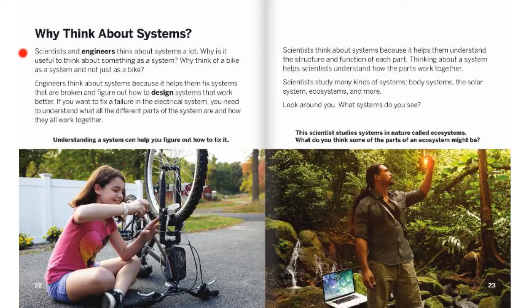Why think about systems? Scientists and engineers think about systems a lot. Why is it useful to think about something as a system? Why think of a bike as a system and not just as a bike? Engineers think about systems because it helps them fix systems that are broken and figure out how to design systems that work better. If you want to fix a failure in an electrical system, you need to understand what all the different parts of the system are and how they work together. Understanding a system can help you figure out how to fix it. Scientists think about systems because it helps them understand the structure and function of each part. Thinking about a system helps scientists understand how the parts work together. Scientists study many kinds of systems: body systems, the solar system, ecosystems, and more.